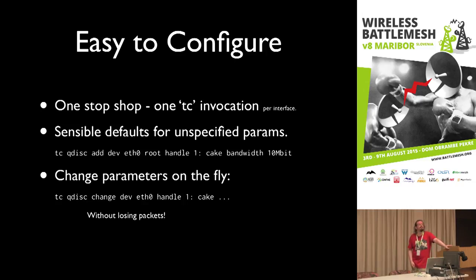Would it be possible for CAKE to get information about bandwidth from the Wi-Fi rate control algorithm? Because we have a different data rate for each unicast target. We'd certainly like that and we're working towards it — we need tighter integration with the Wi-Fi stack in order to do the best possible job on Wi-Fi.